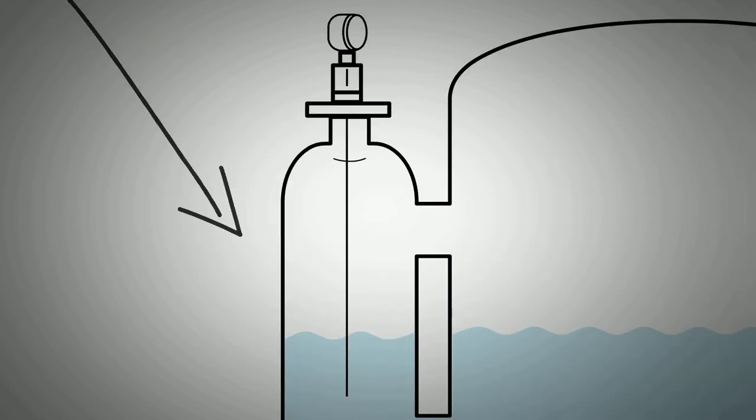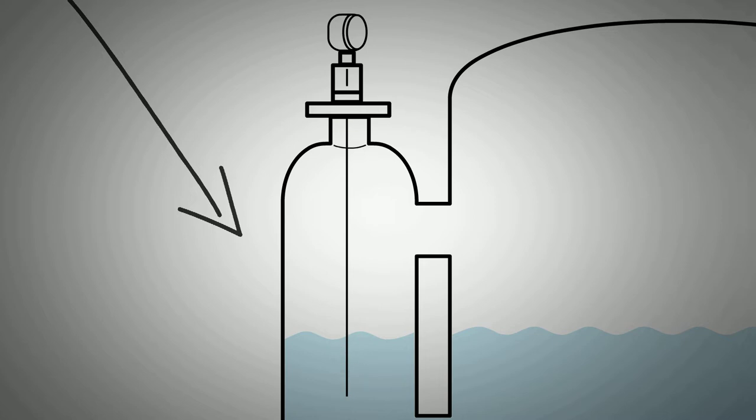The instrument works by emitting high frequency electromagnetic pulses. These pulses are conducted along a probe rod that runs into the media we wish to measure. When the pulses encounter the media, they are reflected towards the transmitter and picked up by a sensor.